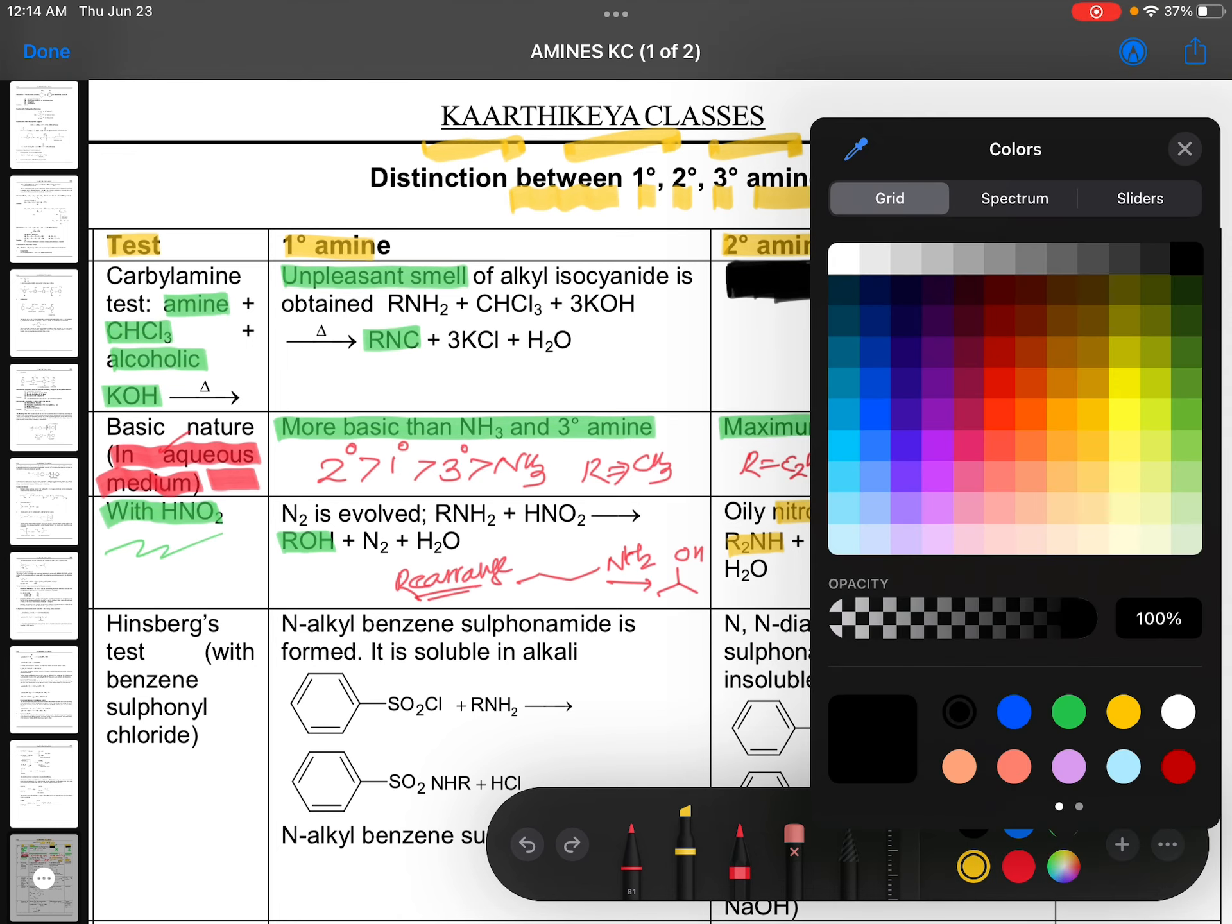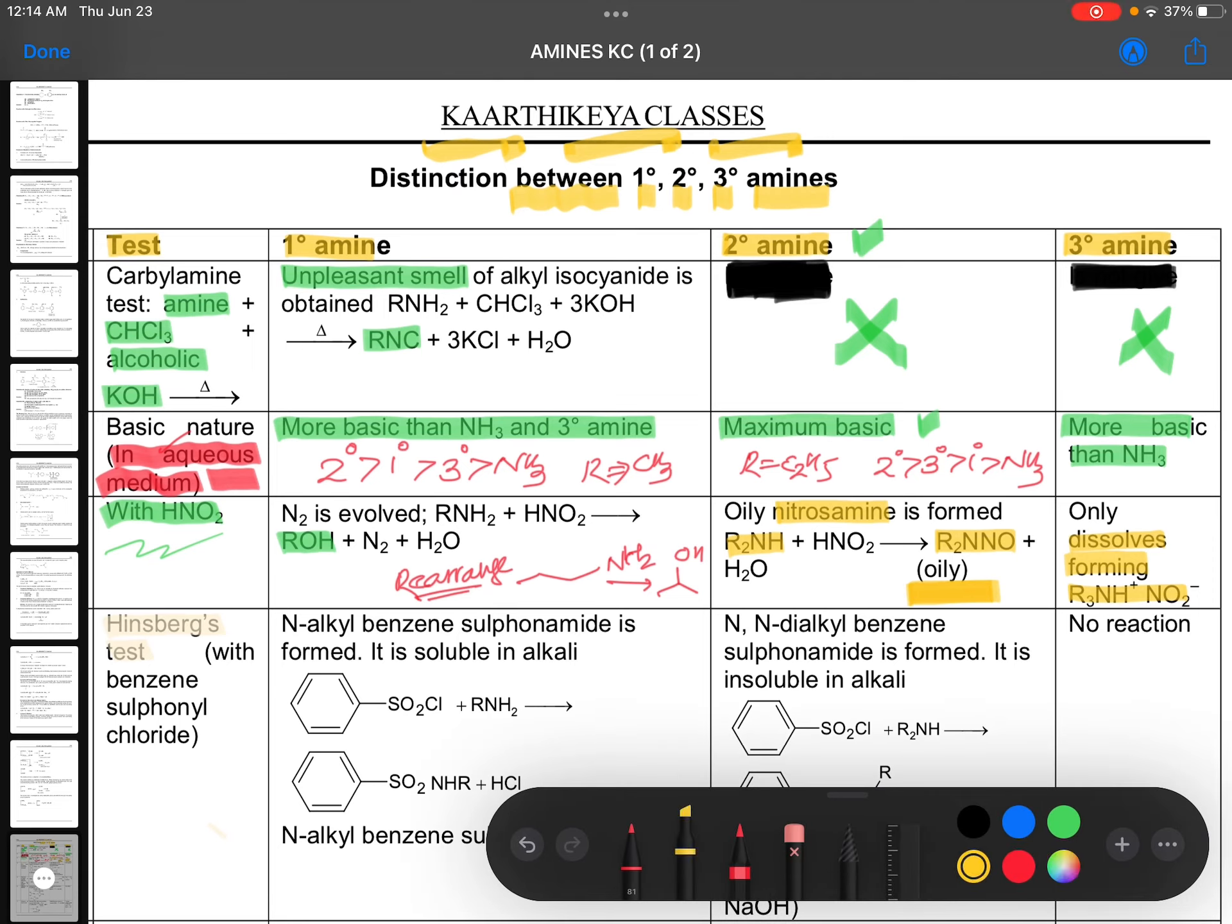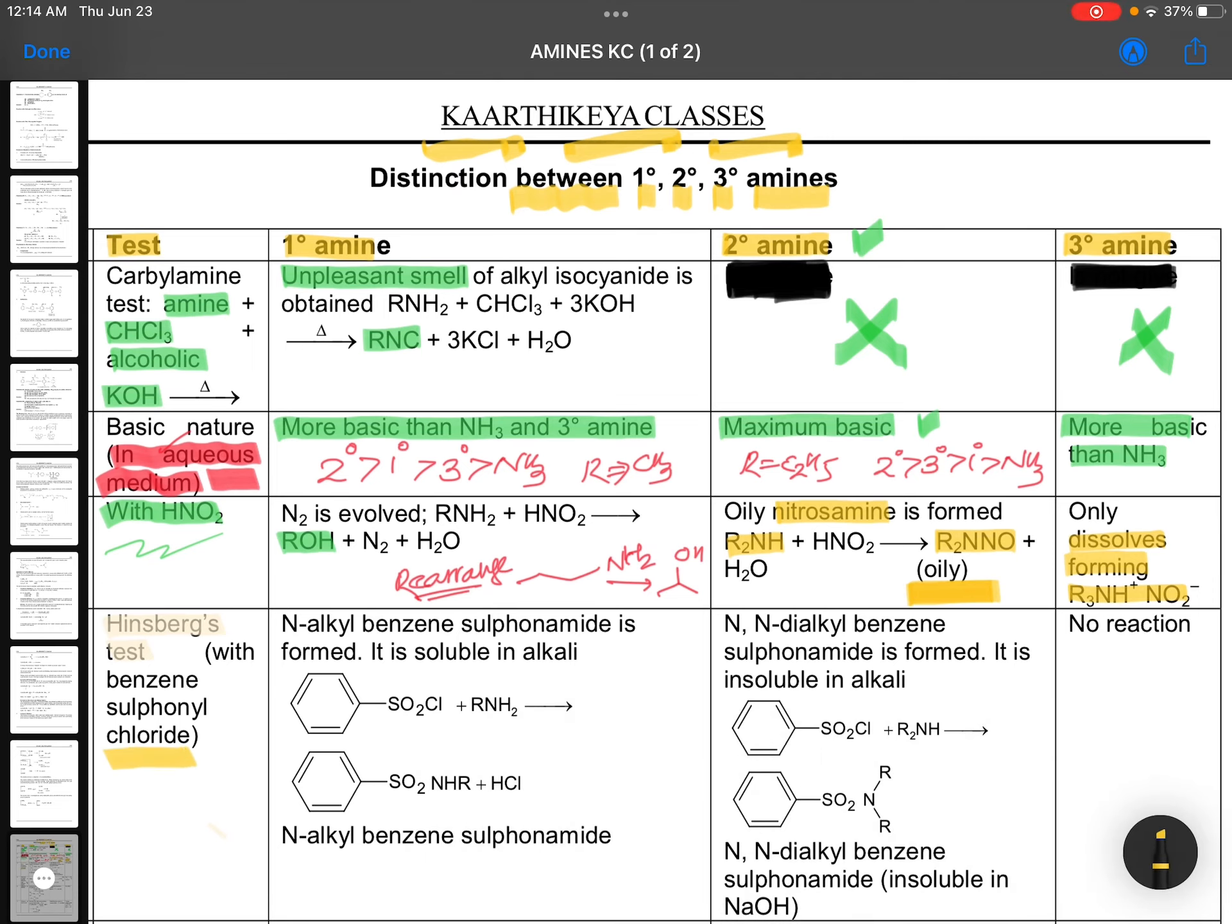Coming to the next one. That is Hinsberg test. Hinsberg reagent is, Hinsberg test. Hinsberg reagent is the benzene sulfonyl chloride. Benzene sulfonyl chloride, whatever we are going to use here. This is one very special, which gives the reaction with primary amines. Primary amines, RNH2, from your chlorine, from your hydrogen will be removed. And you are getting there benzene SO2NHR. This is N-alkyl benzene sulfonamide. Hinsberg reaction, this is possible.